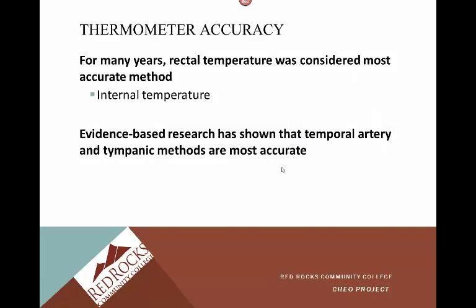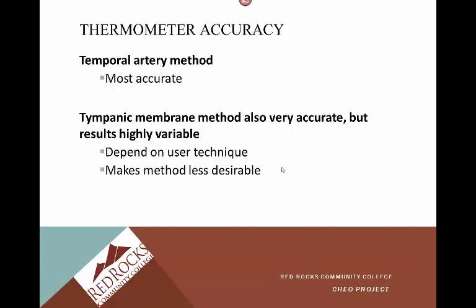For many years, rectal temperature was considered the most accurate method, viewed as representing the internal temperature of the body. However, evidence-based research has shown that the temporal artery and tympanic methods are more accurate. If you have access to a temporal artery or tympanic thermometer, you're going to go with those methods. The temporal artery method is considered the most accurate. The tympanic method is also very accurate, but the issue is that sometimes people don't use appropriate technique — it has to be placed in the ear properly to get a good reading, so user error is a concern.